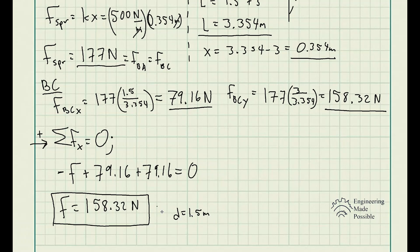This is how you solve these problems in static equilibrium: you use free body diagrams to draw the necessary forces, deal with geometry to get angles or lengths, solve for the stretched length of the spring to get the spring forces, and then apply the sum of forces along X and Y to find the unknown force F, which is 158.32 newtons. In static equilibrium — where there is no motion — the sum of forces along X and Y will equal zero.